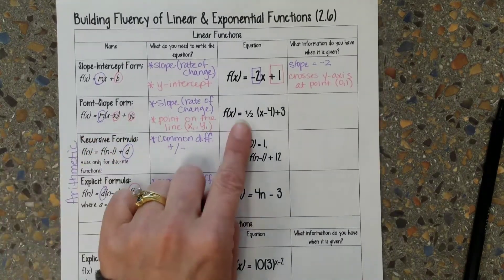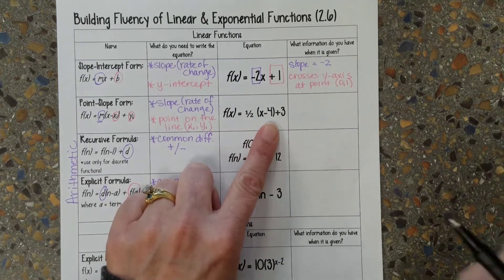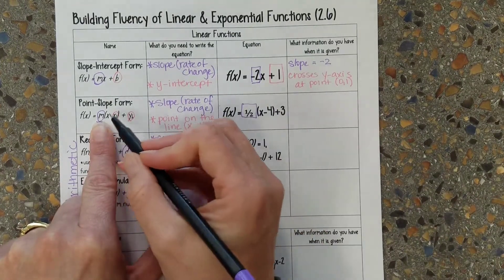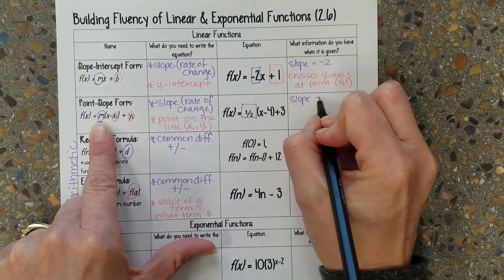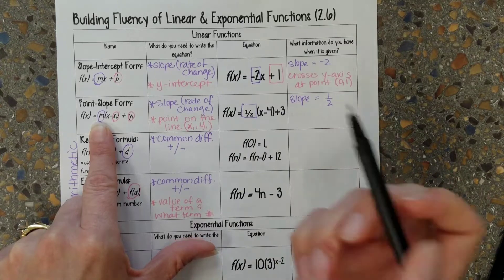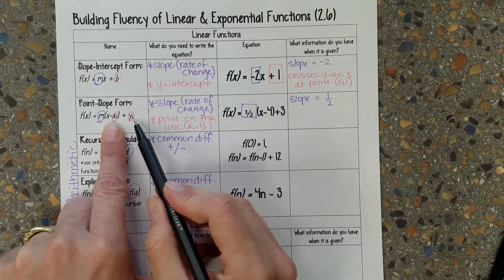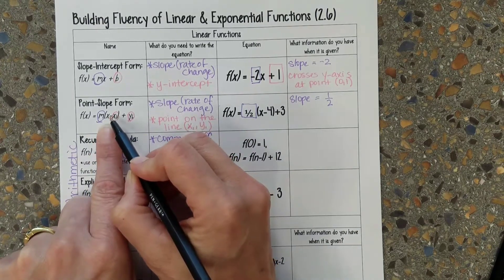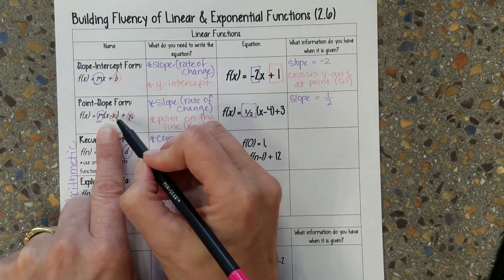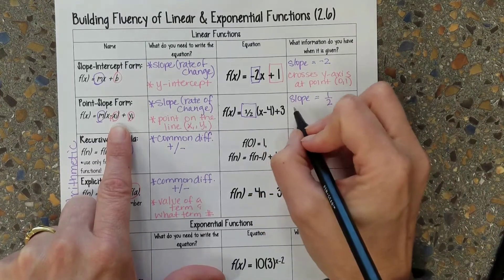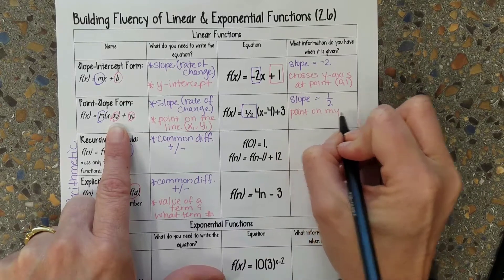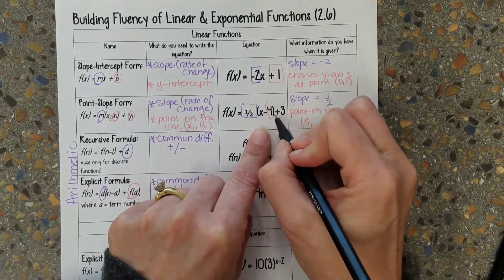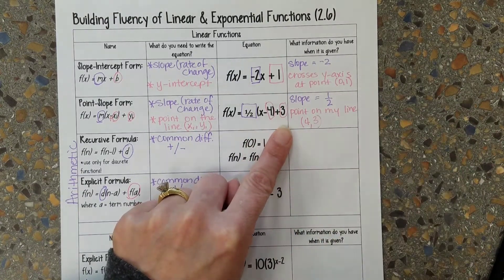The next one is point slope form. I know that the number in front of the parentheses — this half in this case — is my slope. So the slope of my line is equal to 1/2. I also know that the number inside the parentheses and the number outside is a point on that line. Just make sure you pay attention because this is subtracting, so we need the opposite. So if this is minus 7, we need a positive 7. In this case it's negative 4, so the x value is positive 4, and then the y value is 3. So I know there's a point on my line at (4, 3).